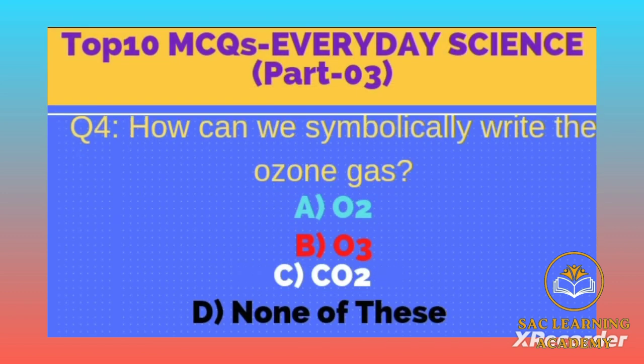Question number 4: How can we symbolically write the ozone gas? Option A: O2, B: O3, C: CO2, D: none of these. Correct option is B, O3. Ozone is an odorless, colorless gas made up of three oxygen molecules, O3, and is a natural part of the environment. It occurs both in the Earth's upper atmosphere, or stratosphere, and at ground level in the lower atmosphere, or troposphere.